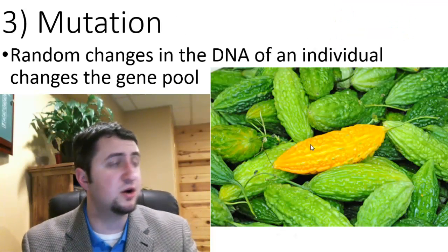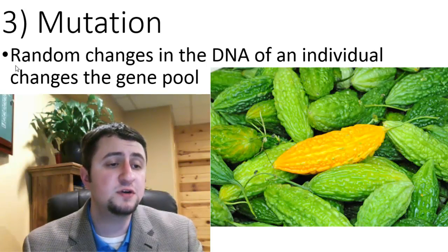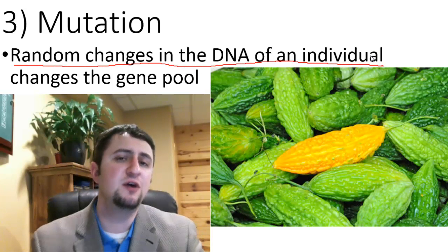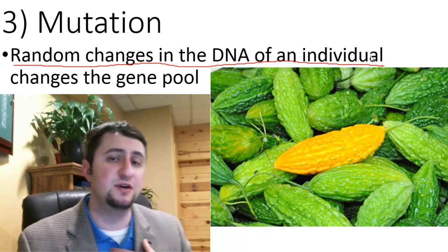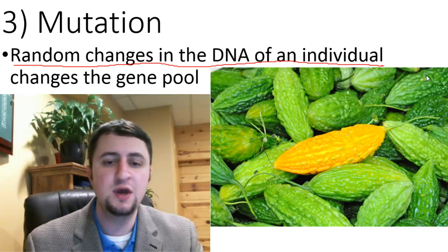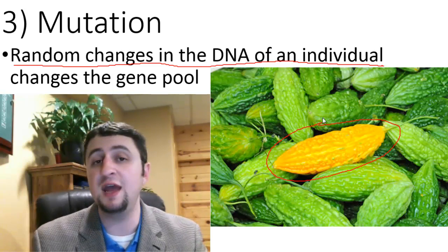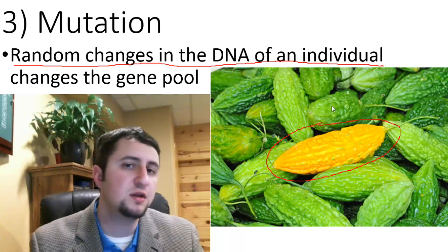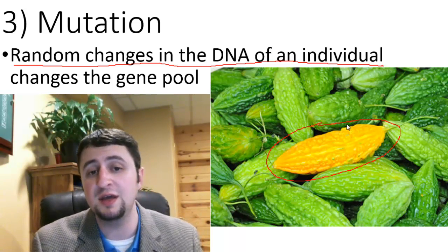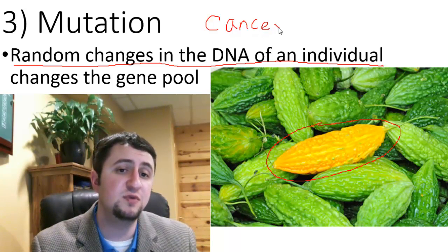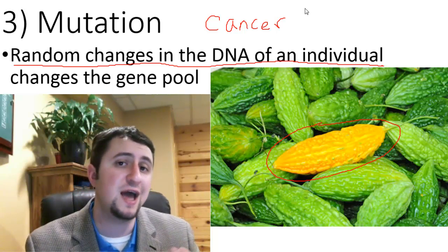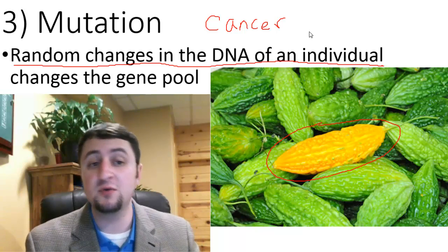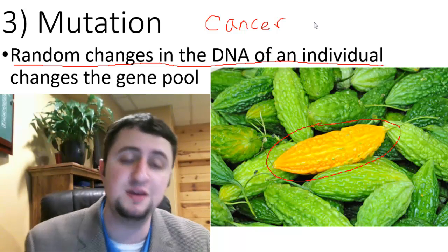A third way that evolution can occur is through mutation. Mutation is a random change in the DNA of one single individual. If we change the DNA of one single individual, it's ultimately going to change the gene pool. For example, if a seed mutated and became yellow when all the rest are green, that changes the gene pool. However, most mutations are deadly and don't actually show up — cancer is a type of mutation, and organisms that develop cancer typically die off. So mutation doesn't contribute to evolution as much, but a random change in the DNA of an individual will of course change the DNA of the gene pool as a whole.